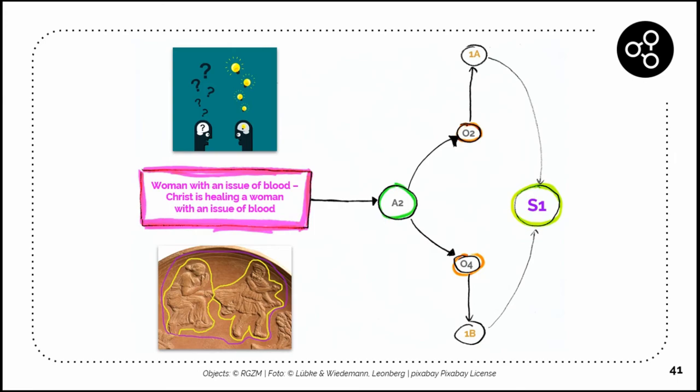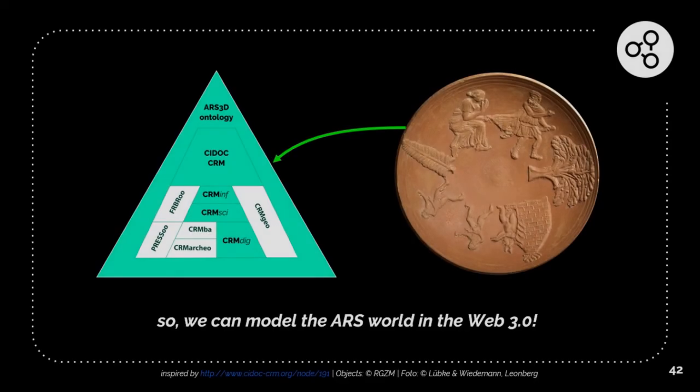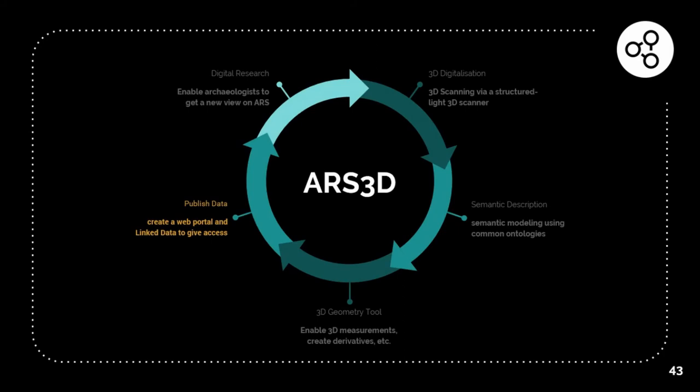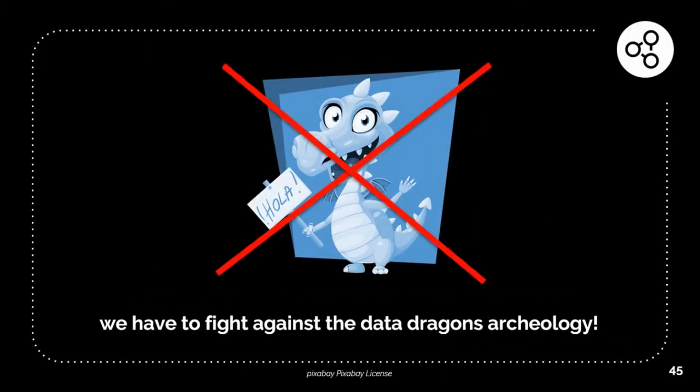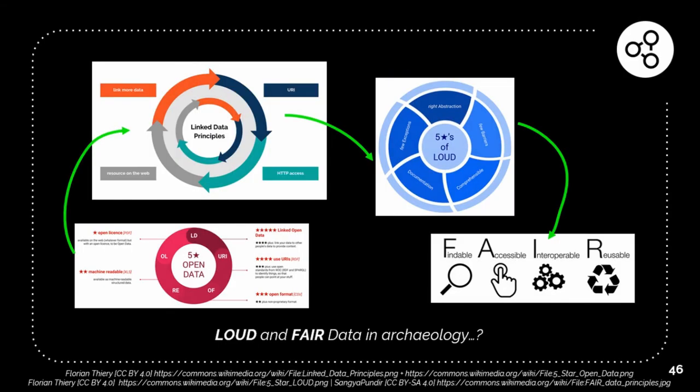The big question is how we model this in the Web 3.0 or semantic web using linked data. We have to publish the data, and maybe you know in old maps there are some dragons on it if you don't know what is really there. So we have to fight against this data dragons in archaeology. We have to know where it is somewhere. And hopefully you all know this kind of concept: five-star open data, linked open data, LOUD data, and FAIR data. In my opinion we have to model everything like this, our ontology too.